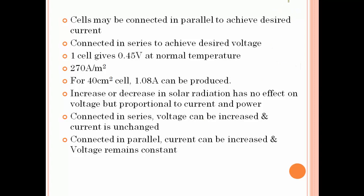Cells may be connected in parallel to achieve the desired current. If more current is required, cells should be connected in parallel. If more voltage is required, cells should be connected in series. One cell produces around 0.45 volts at normal temperature, and the current depends on the cell area.